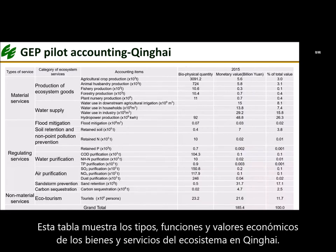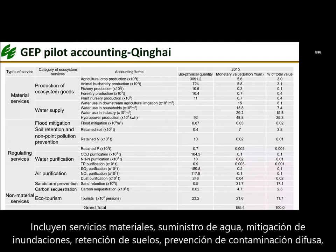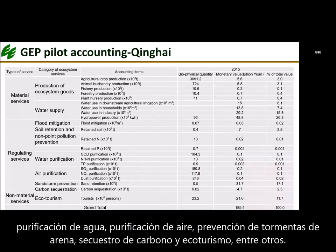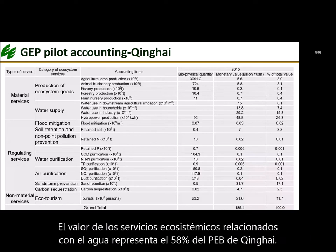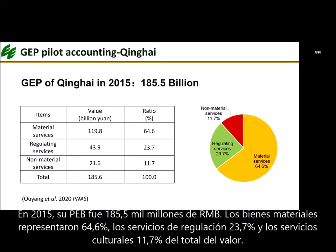This table shows the types, functions, and economic values of ecosystem goods and services in Qinghai, including material services, water supply, flood mitigation, soil retention, non-point pollution prevention, water purification, air purification, sandstone prevention, carbon sequestration, and ecotourism, among others. The value of water-related ecosystem services accounts for 58% of Qinghai's GEP. In 2015, Qinghai's GEP was 185.5 billion RMB. The value of material goods accounted for 64.6%, regulating services for 23.7%, and cultural services for 11.7% of the total.